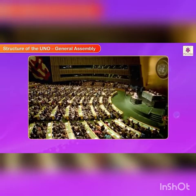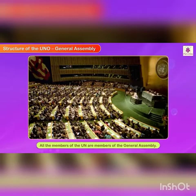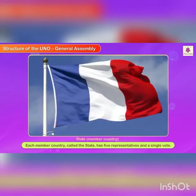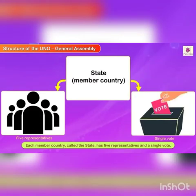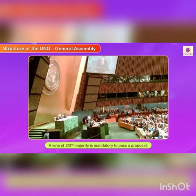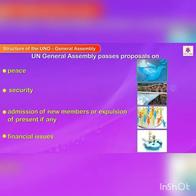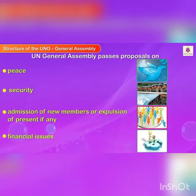General Assembly: All the members of the UN are members of the General Assembly. Each member country, called the state, has five representatives and a single vote. A vote of two-thirds majority is mandatory to pass a proposal. The proposals could be on peace, security, admission of new members or expulsion of present members if any, financial issues, etc.